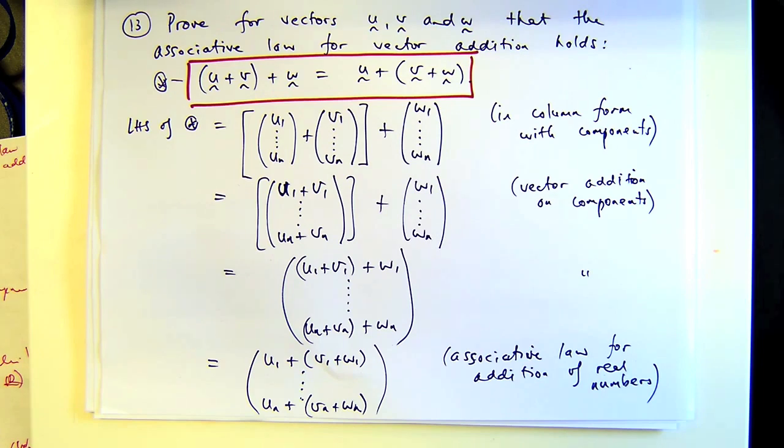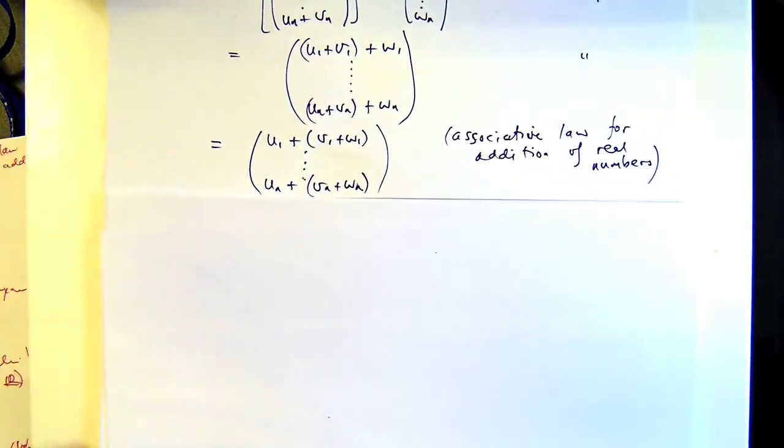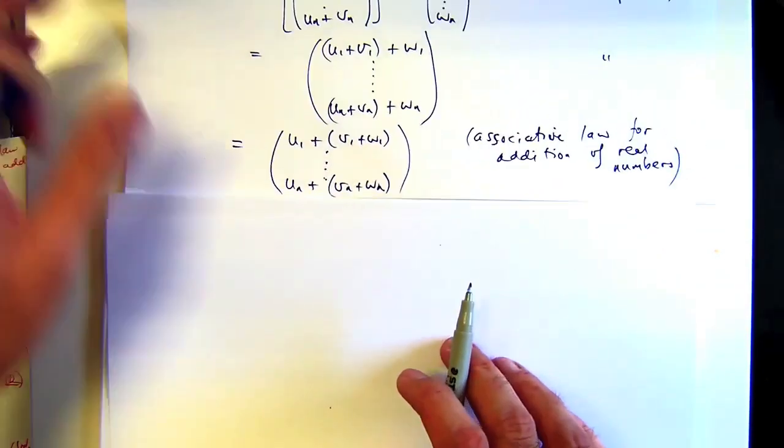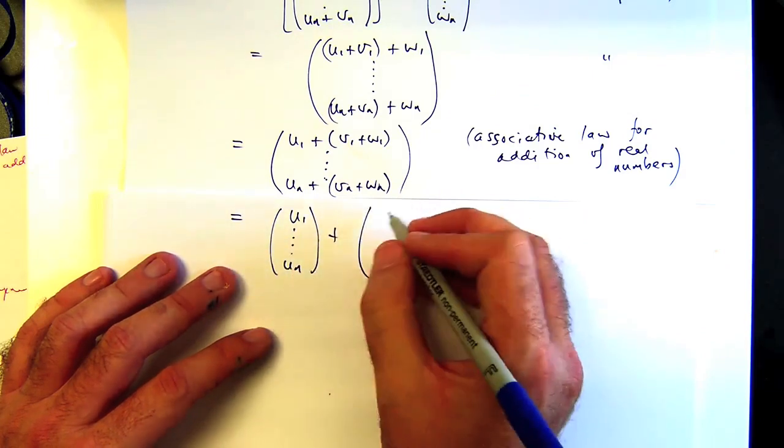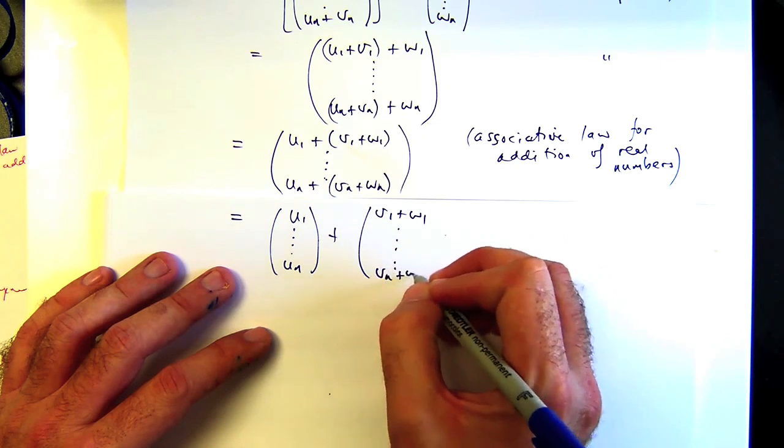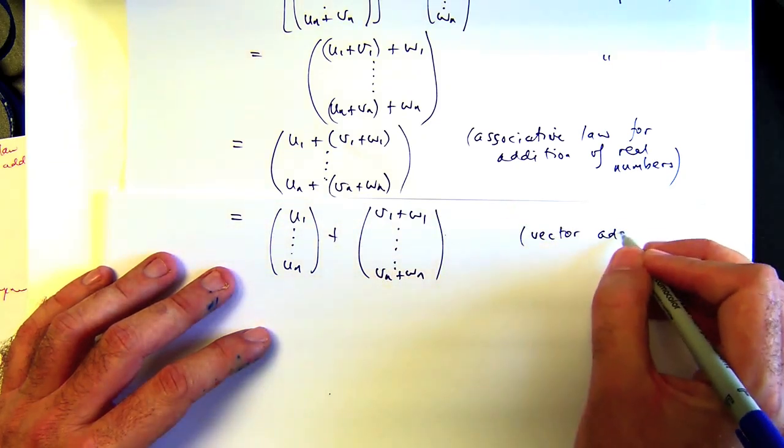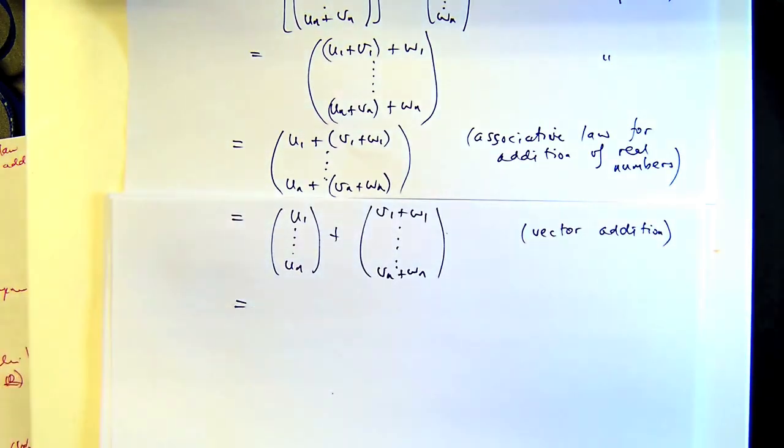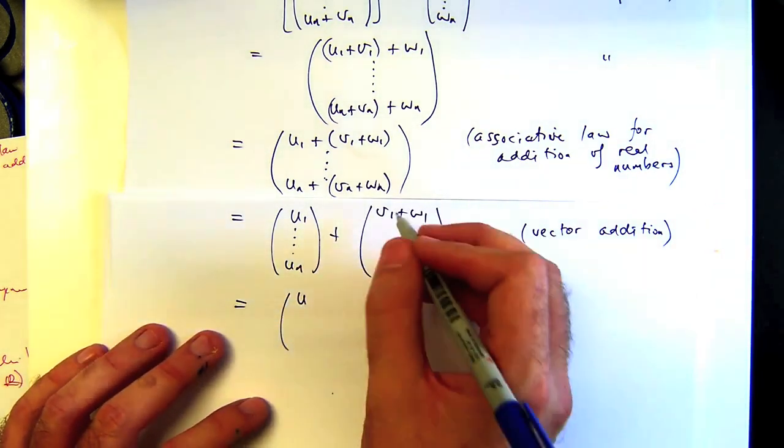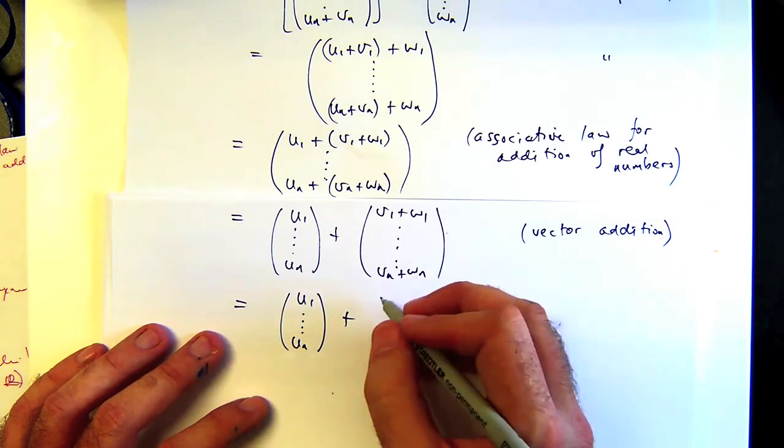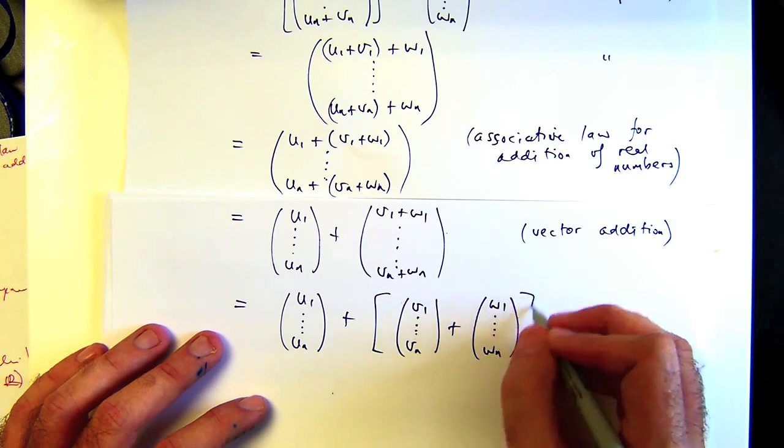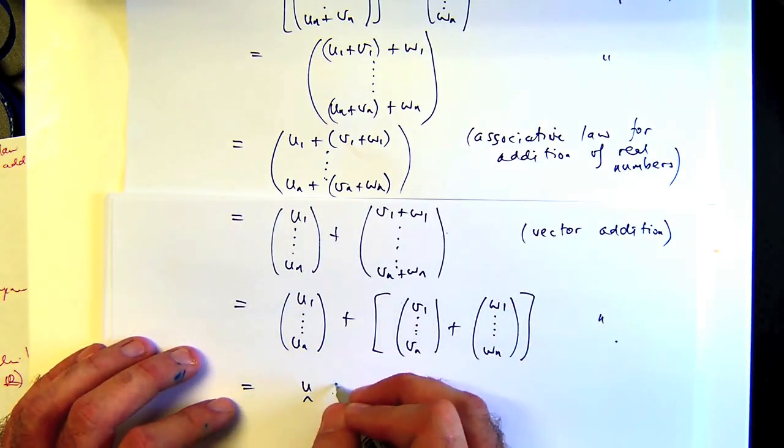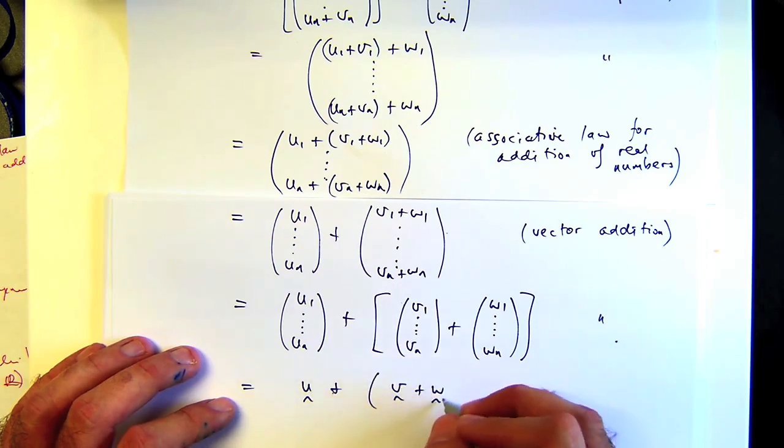So now what you can do is unpack that back into the vector form. We want to unpack that until we get to there. So just using again vector addition in a component-wise fashion. Then I can work on this one. Again, vector addition. And that should be the right hand side.